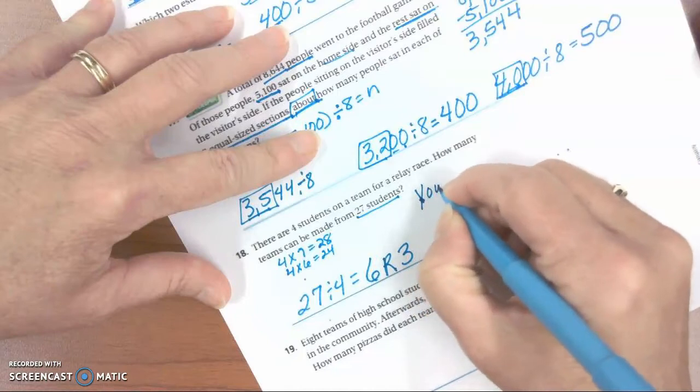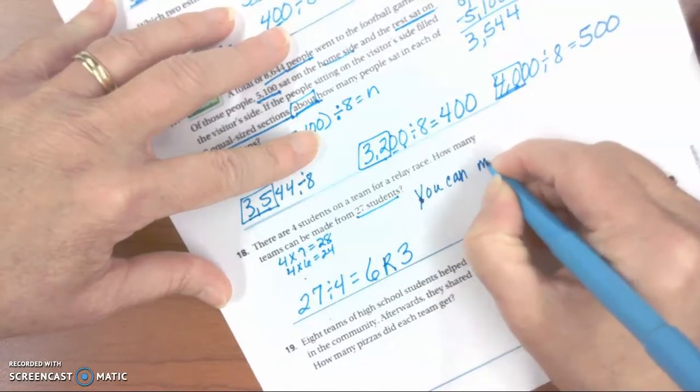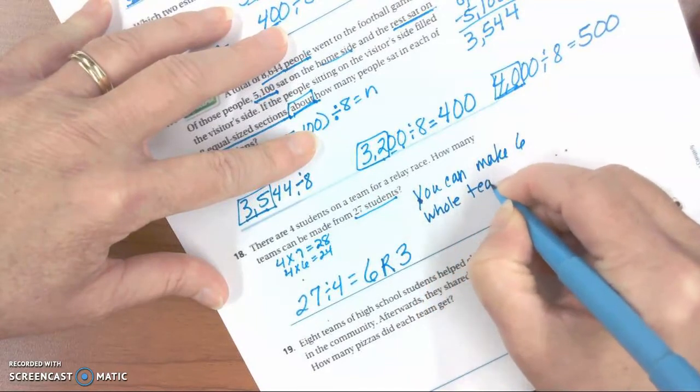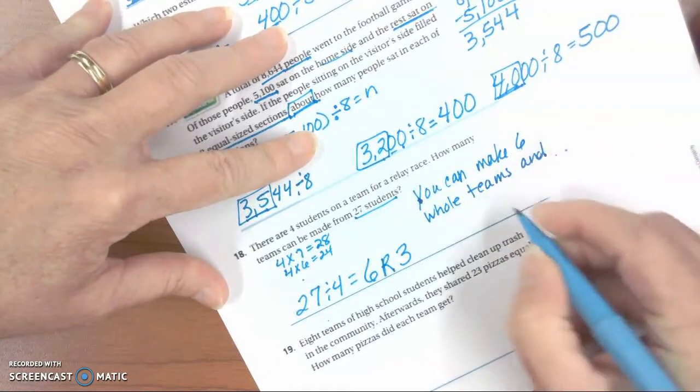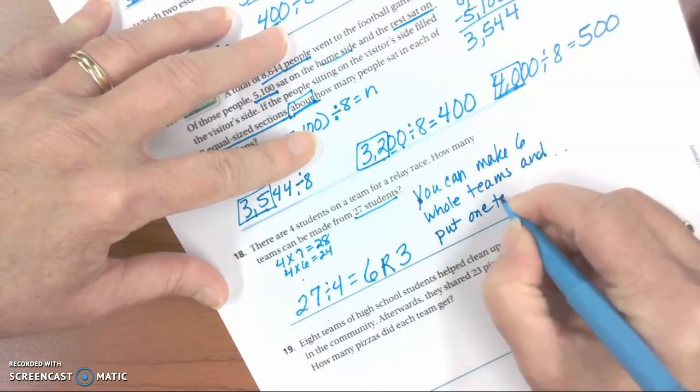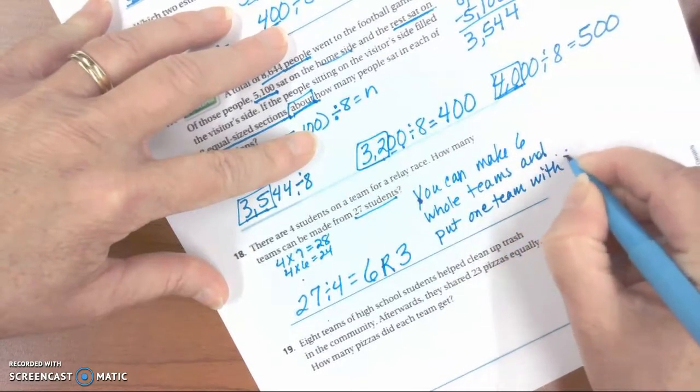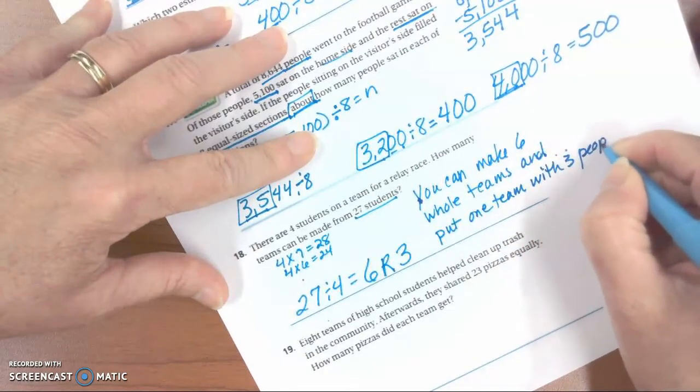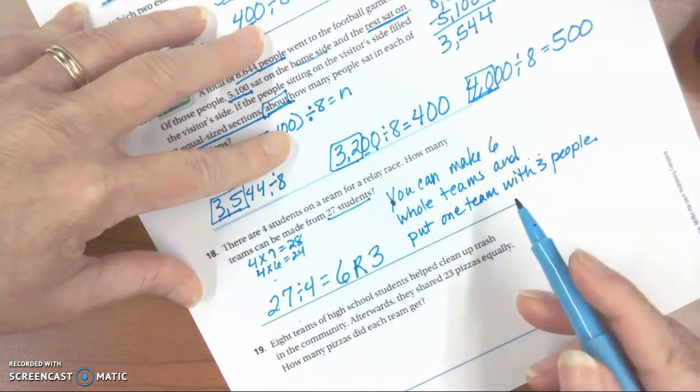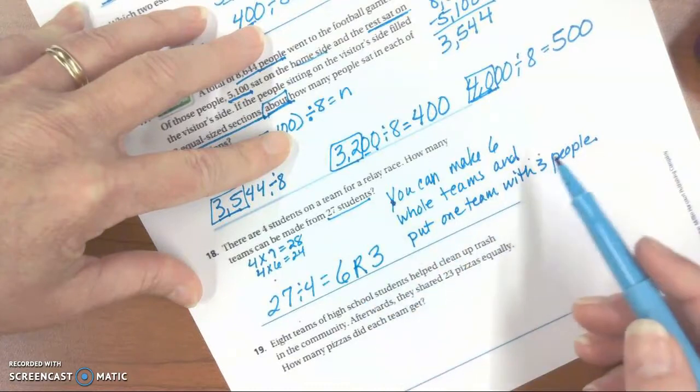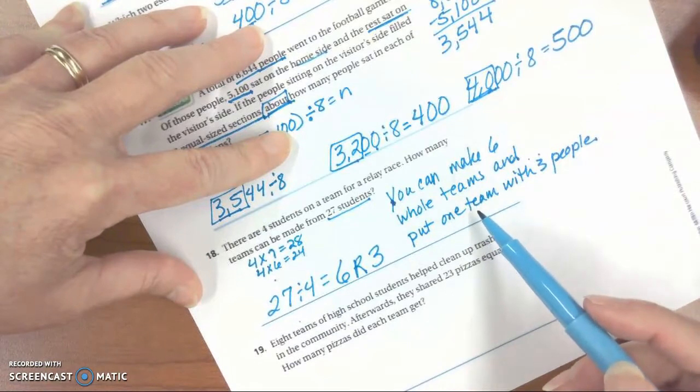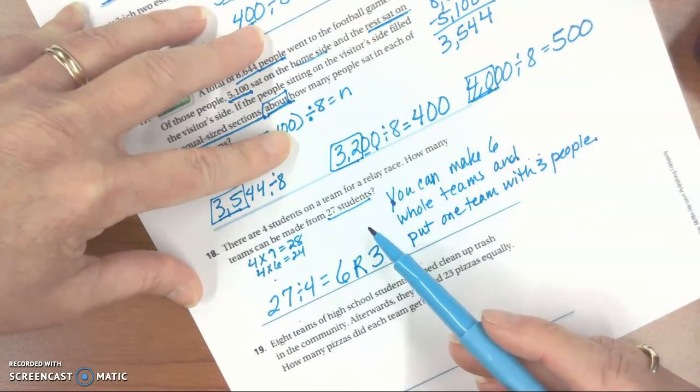So you can make 6 whole teams and put 1 team with 3 people, right? Or you could say, you can make 6 whole teams and add those 3 people to one of the teams. But we can't just throw people away. So we have to understand what the question is asking us and interpret the remainder.